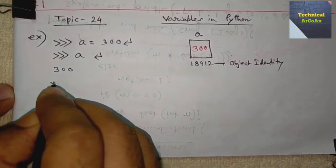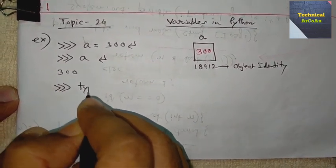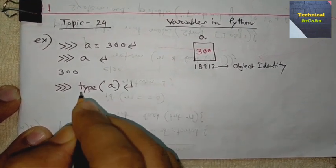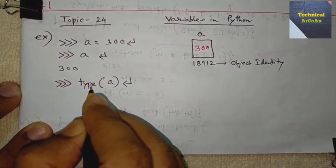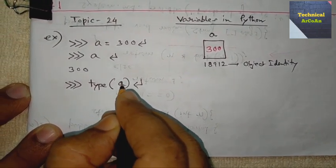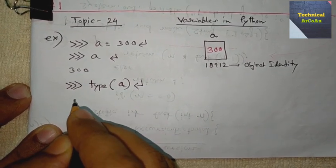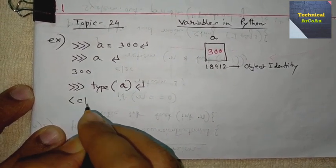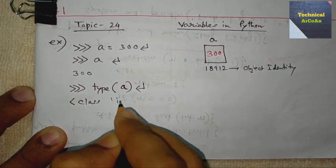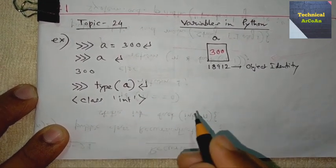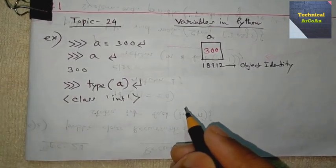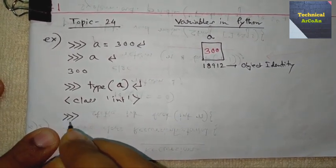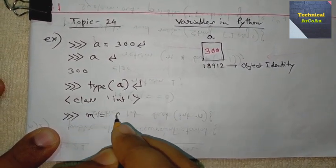If we want to know the type of variable a, we write type(a) and press enter. It gives an output of class int, meaning the variable a is also of integer type.